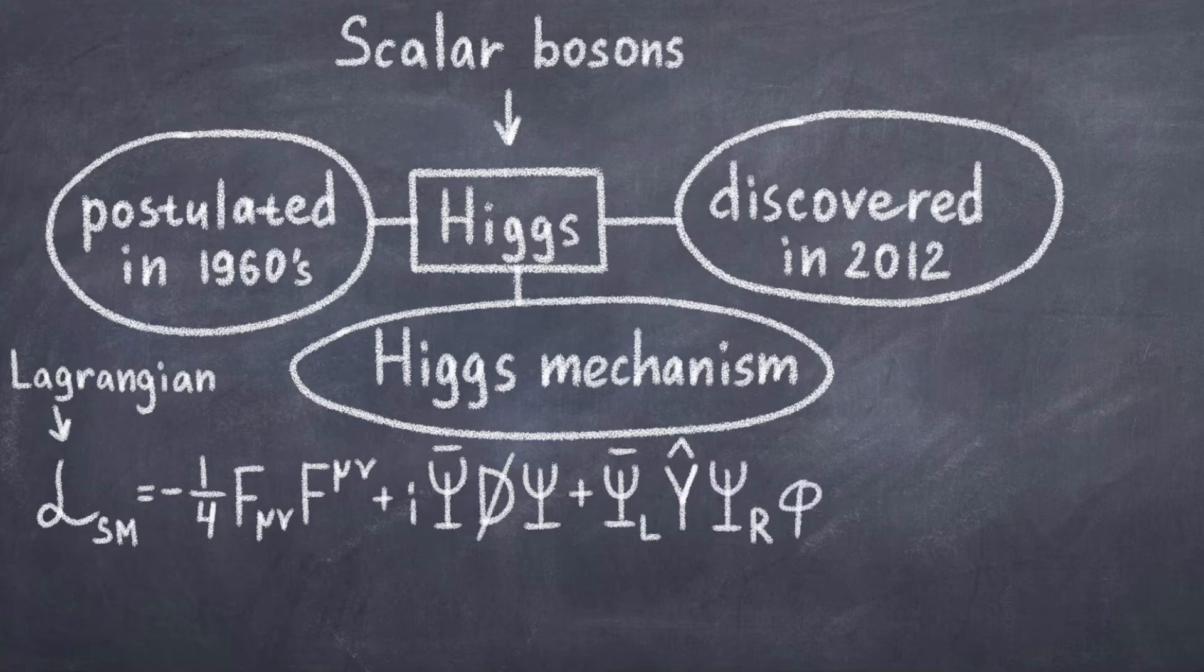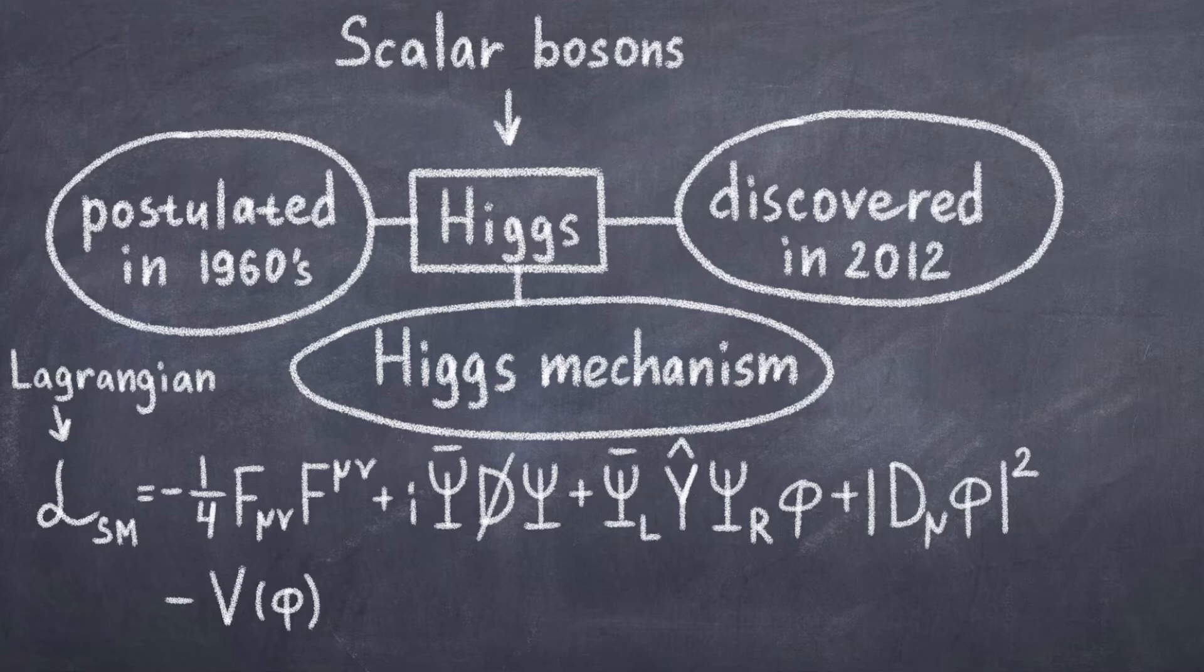If we write the Lagrangian of the standard model, we see that there are no mass terms with m, but instead some terms with phi, which we recognize as the scalar Higgs field. And this leads to the mass of the particles. This equation is rather complicated and we will look at this in detail later. But now you have seen the short version of the standard model Lagrangian and that the Higgs field is there.